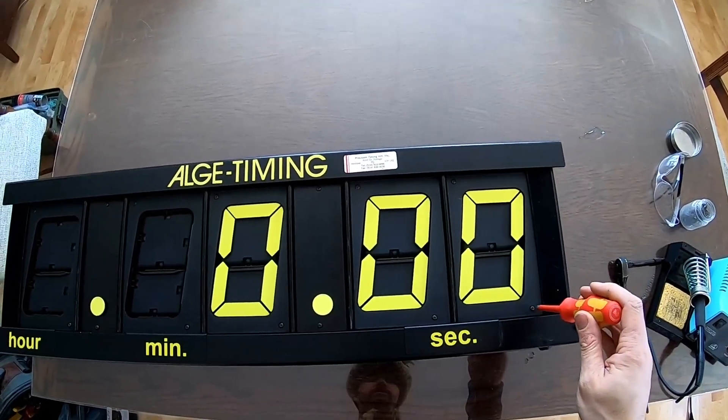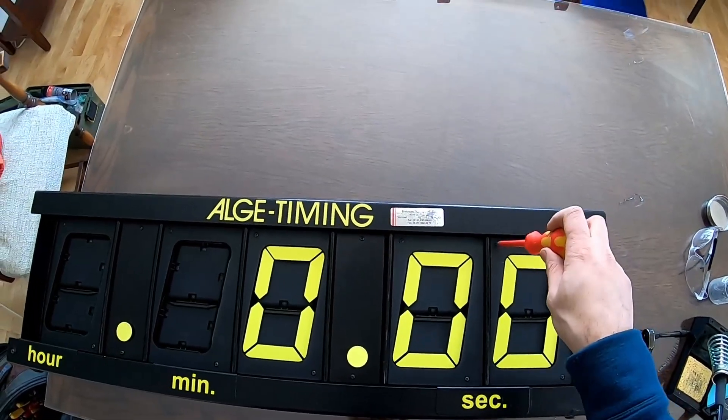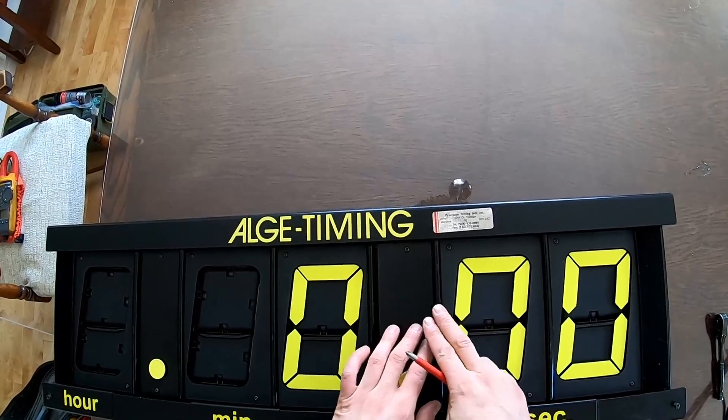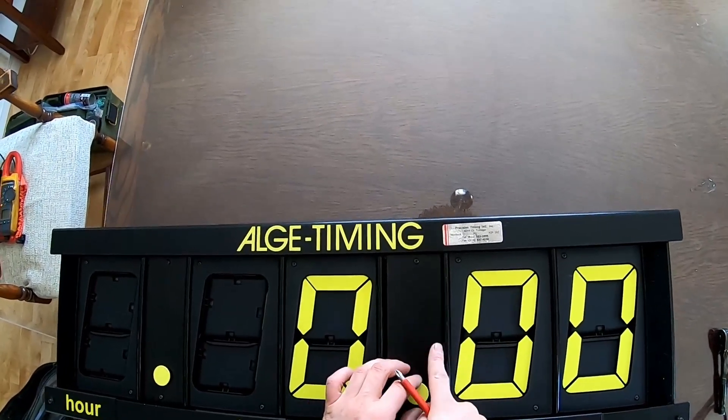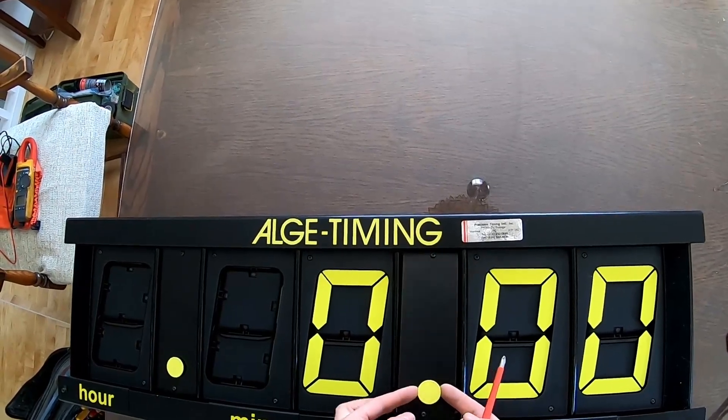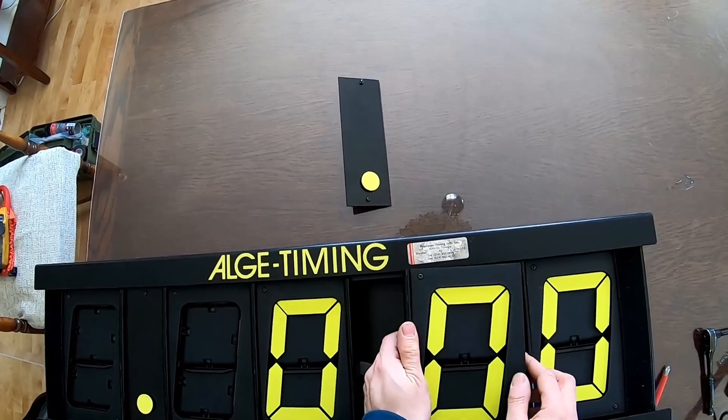All right next we're going to just loosen the screws for each number. There's two screws per number and they are Phillips number two. All right so depending on how it got put back together the overlap might not be perfect. I find the easiest way is to get out one of the decimal places.